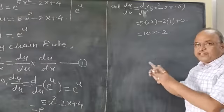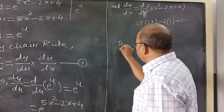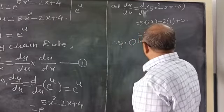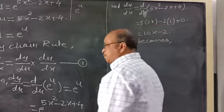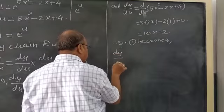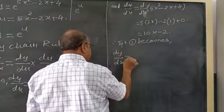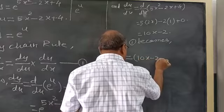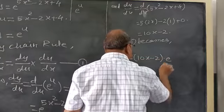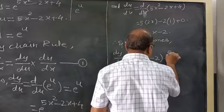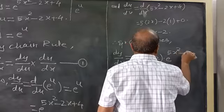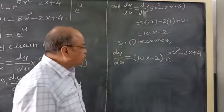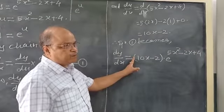Putting both values into equation 1: dy by dx is equal to (10x - 2) into e raised to the power (5x² - 2x + 4). This is the complete derivative.